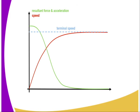We can represent this graphically using resultant force and acceleration. For a body falling through a fluid, its velocity increases up to a point where the drag equals the driving force through the fluid. At that point the body moves at a constant velocity, which we refer to as terminal velocity. The speed increases up to a point where it becomes constant.